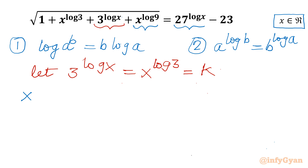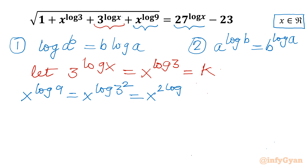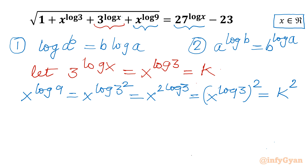Now I will calculate x^(log 9) in terms of k. We have x^(log 9) equals x^(log 3²). Using property number 1, this is x^(2·log 3). Using the exponent property, this equals (x^(log 3))², and since x^(log 3) is k, this is k².